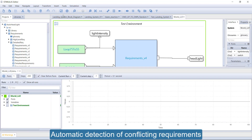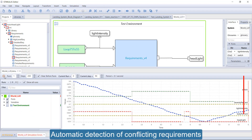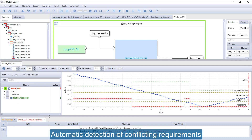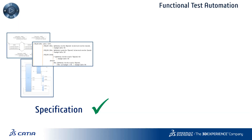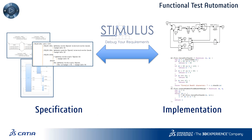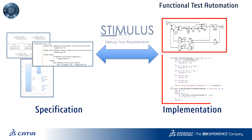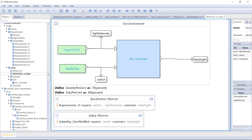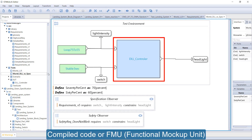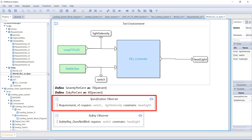This other simulation reveals the conflict between requirements, which has been automatically detected by Stimulus. When a sufficient level of confidence is achieved, the specification can be used for development. Once the design model or some code has been developed, it can be tested automatically in Stimulus. Simply drag and drop the compiled code or an FMU instead of the specification and use the latter as an observer.